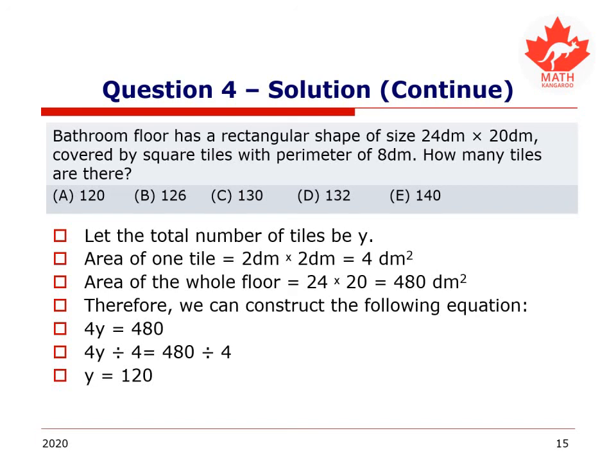We could have solved this in any other number of ways. We could have, for example, divided the 24 by 2 and the 20 by 2, and multiplied those together and gotten 12 times 10 equals 120 still. As long as you were using equations, you were making progress on this question. So 120 tiles, answer A, final answer.